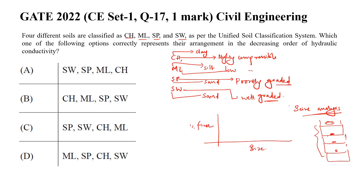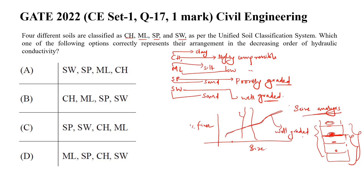For a particular sieve size, the percentage of the soil which passes through out of the total sample is called the percentage of finer for that size. When you plot this for all sizes, you get a curve. When the soil has only a single size, you get a steep curve. When the soil is distributed over different sizes, you get a gradual curve — this represents well graded soil.